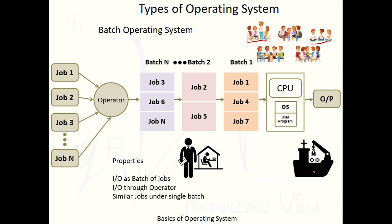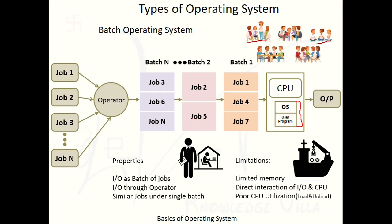Now let's discuss the limitations of Batch Operating System. First: limited memory — the same limitation from the earlier system remains; we are not making any change to memory. Second: no direct interaction between input/output and CPU. The user is still not able to communicate directly with the system — the system is not interactive. I/O devices are still communicating directly with the CPU because input and output are again in the form of jobs.